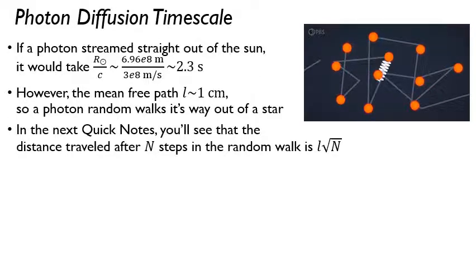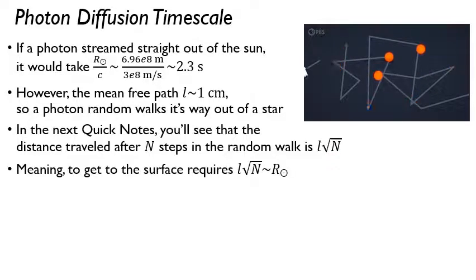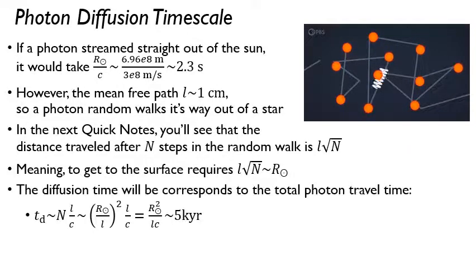So in the next quick notes on random walk, you'll see that the distance that you travel after N steps in a random walk is just the mean free path of your each step size times the square root of the number of steps. So then to get to the surface that means that your random walk distance is going to have to be equal to the radius of the Sun in this example.